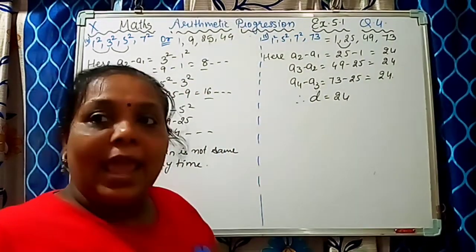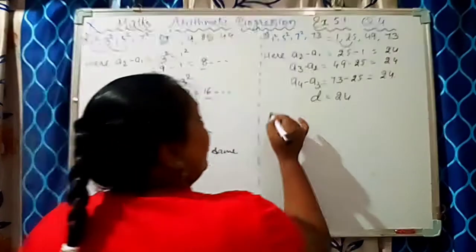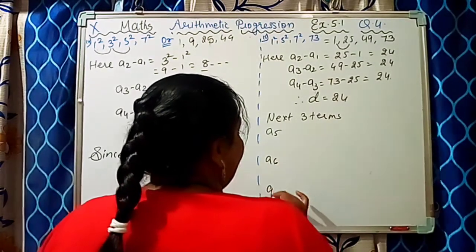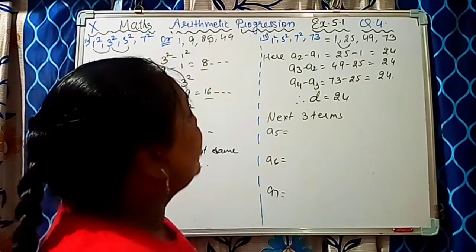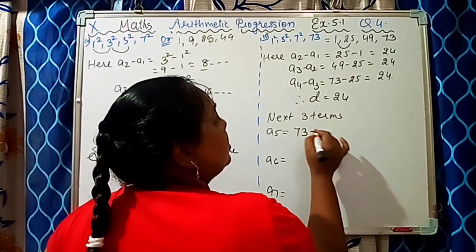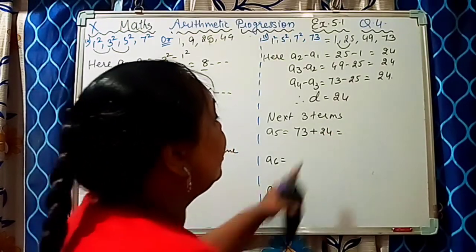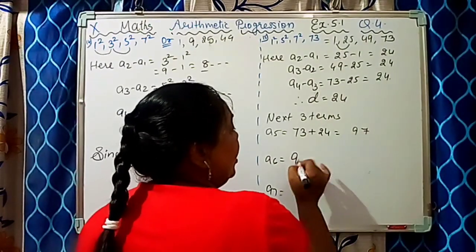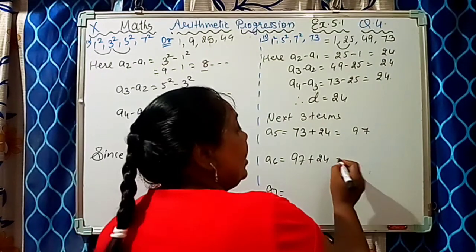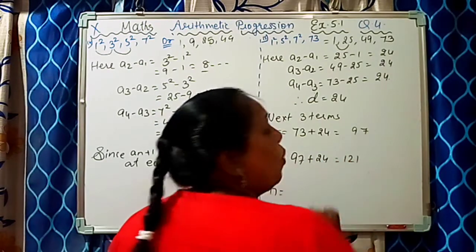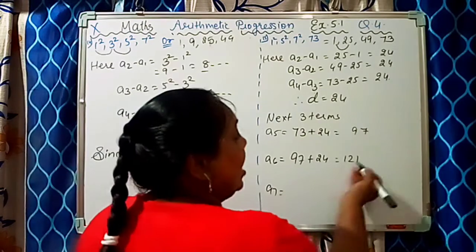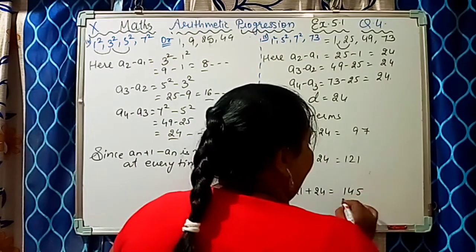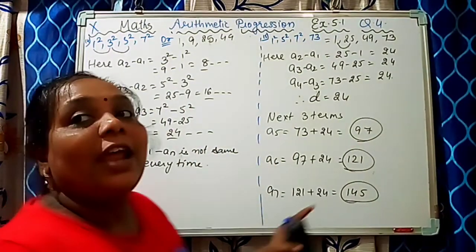We got an AP — it forms an AP. So we will find out the next 3 terms. A4 is given as 73, so we find A5, A6, and A7. A5 is 73 plus D, which is 73 plus 24, giving 97. A6 is 97 plus 24, which is 121. A7 is 121 plus 24, which is 145. So our next three terms are 97, 121, and 145.